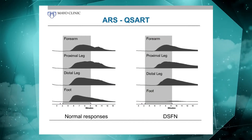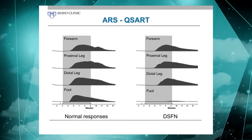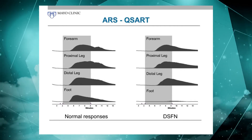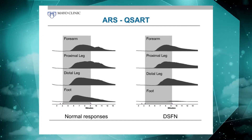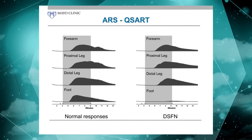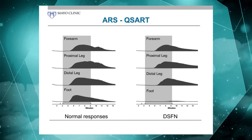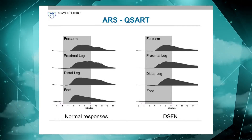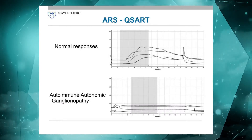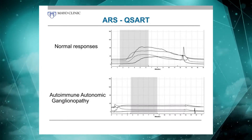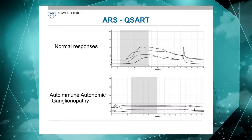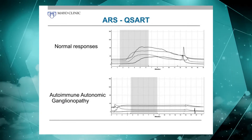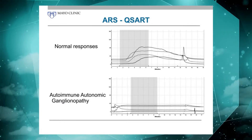Here is an example of a normal sweat response on the left, where there are rather homogeneous responses at all four sites. And on the right, an example of a patient with distal small fiber neuropathy and a virtually absent response in the foot. On top, again, a normal example. And on the bottom, a patient with a severe form of autoimmune autonomic ganglionopathy who has absent responses at all four sites.